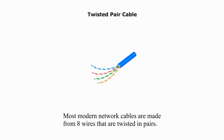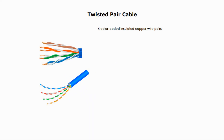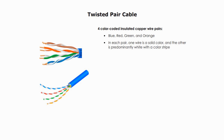Most modern network cables are made from 8 wires that are twisted in pairs. Wires are twisted to help eliminate crosstalk, thus improving data transmission performance. Twisted pairs are four color-coded insulated copper wire pairs: orange, blue, green, and brown. In each pair, one wire is a solid color and the other is predominantly white with a color stripe. More wire pair twists per foot means more resistance to crosstalk, higher quality, and more expensive.